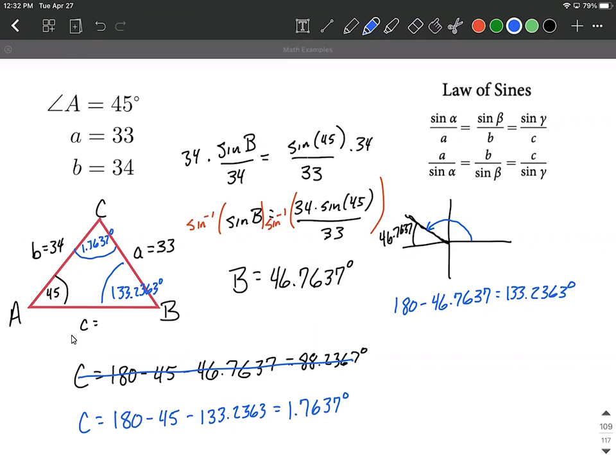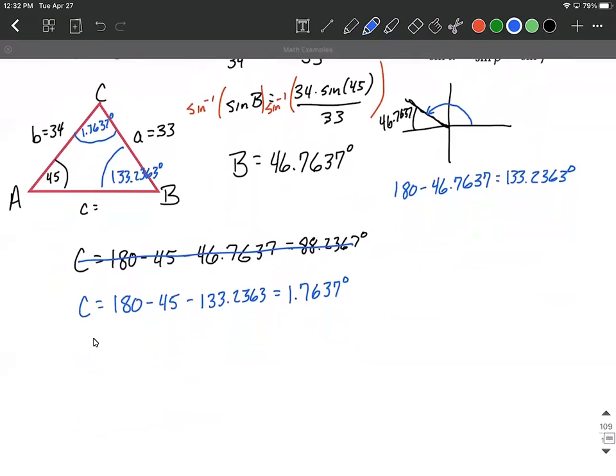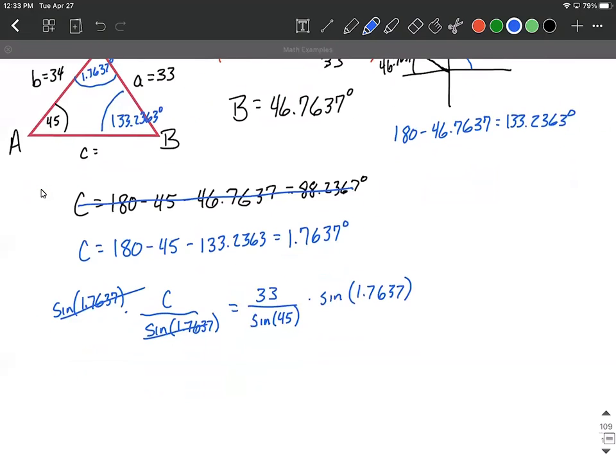The very last thing that we need to do to solve this triangle is find our side length C. So to do that, I'm going to go back to our law of sines. I'm going to use the version where our side length is on top over sine of the angle opposite it. So the angle opposite it is this 1.7637 degrees, and I'm going to go back to the A's that we started out with. You could use the B's just as easily, but side length 33 over sine of 45 degrees, and then we'll just multiply both sides by this denominator, the sine of 1.7637, allowing us to get side length C on one side all by itself. I'm going to go ahead and get the calculator out, make sure it's still in degree mode, and we get 1.4364.